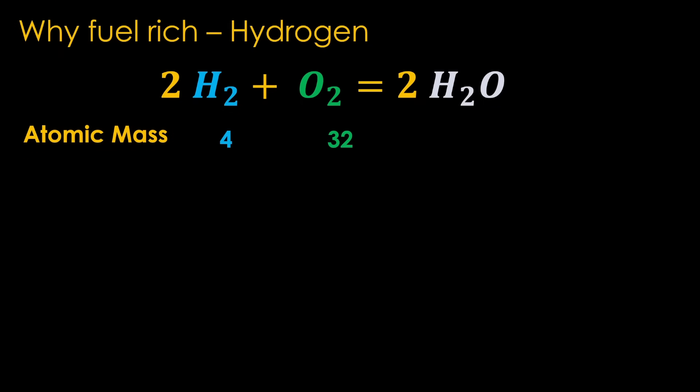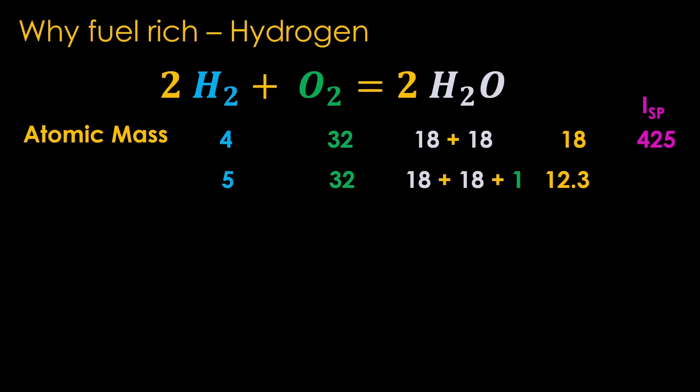But 6-to-1 is a long way from 8-to-1. Why would a hydrolox engine run so fuel-rich? At the stoichiometric ratio, the exhaust is two water molecules each with a mass of 18, so exhaust particle mass is 18. But if we add one extra hydrogen, that hydrogen is not burned and comes out of the exhaust stream directly, dropping the average exhaust particle mass down to 12.3. Lighter particles mean higher exhaust speeds and therefore an increase in specific impulse. A hydrolox engine at 8-to-1 might have a specific impulse of 425, while one at 6-to-1 will be a little over 450 — a 6% increase.